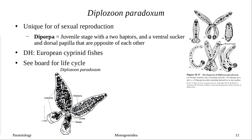Our last example for the monogenes is Diplozoon paradoxum. The name should be enough — paradoxum, it's almost like a paradox. This organism is presented because it has unusual sexual reproduction. Two worms will fuse so that they can then reproduce sexually. Once they fuse, that new life cycle stage is called the diporpus. The juvenile stage has two haptors, a ventral sucker, and dorsal papillae on opposite sides.